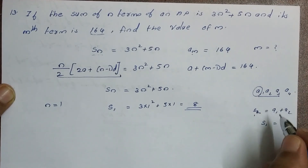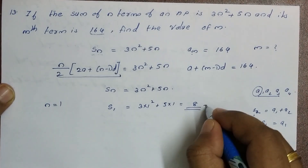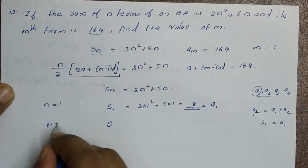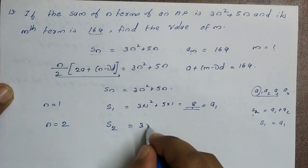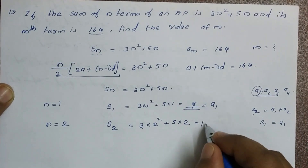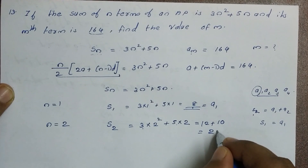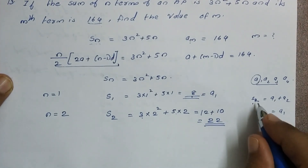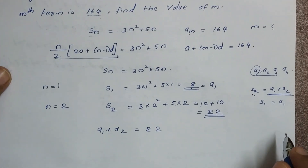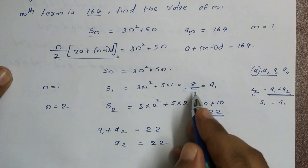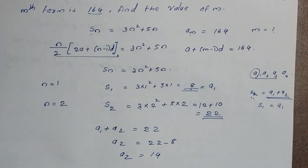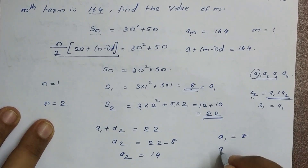So S1 = a1 = 8, meaning the first term a1 = 8. Then for N = 2, S2 = 3(2²) + 5(2) = 3×4 + 10 = 12 + 10 = 22. Since S2 = a1 + a2, we get a2 = 22 - 8 = 14.